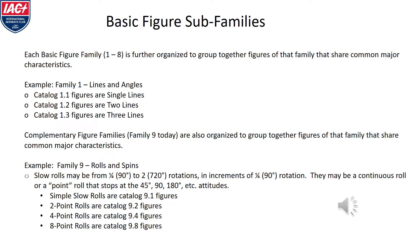Complementary figure families are also organized to group together figures that share common major characteristics. Looking at family 9, rolls and spins: slow rolls may be from one-quarter rotation up to two rotations in increments of one-quarter of a rotation. Simple slow rolls are found in catalog section 9.1. Two-point rolls are 9.2 figures. Four-point rolls are in catalog section 9.4. Eight-point rolls are in catalog section 9.8.